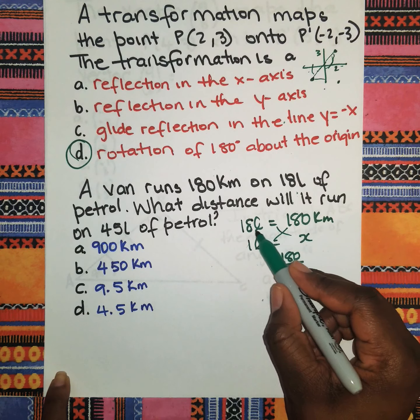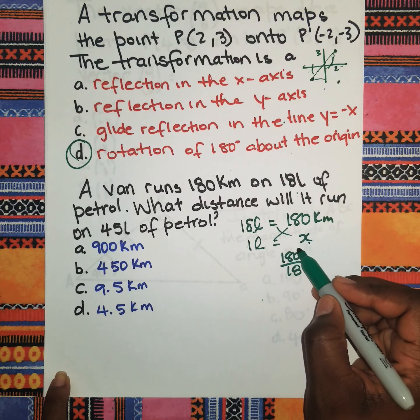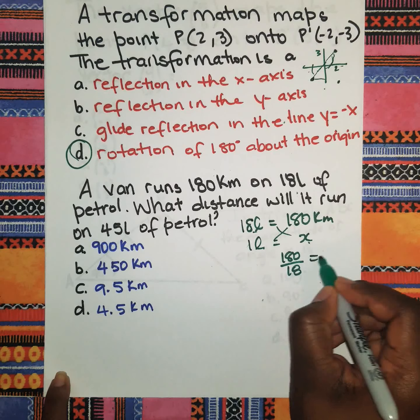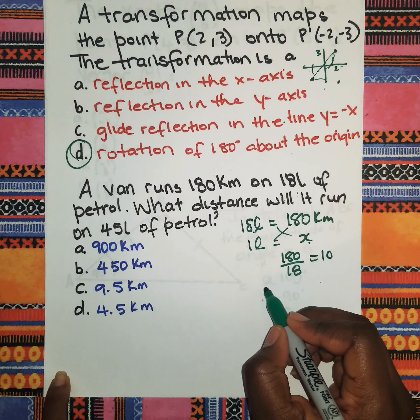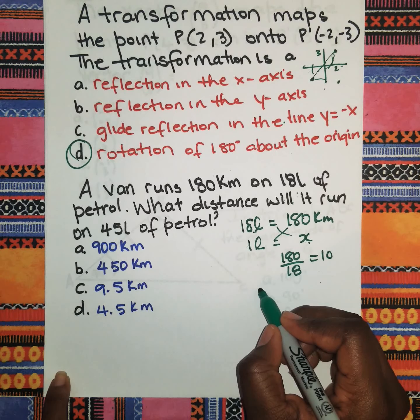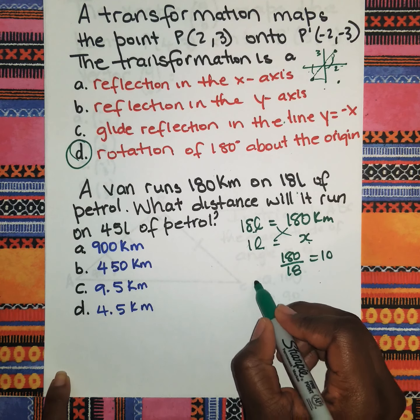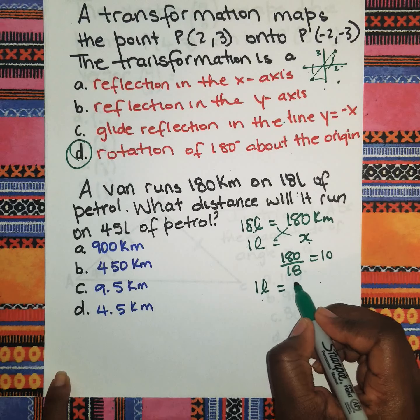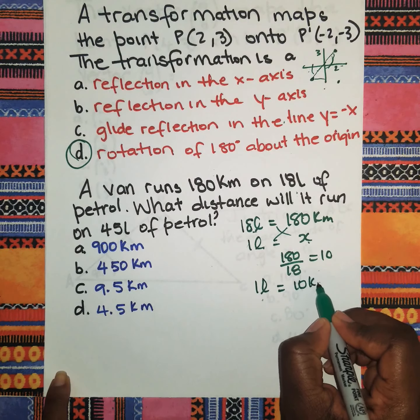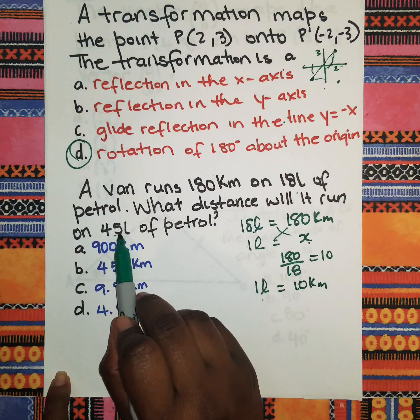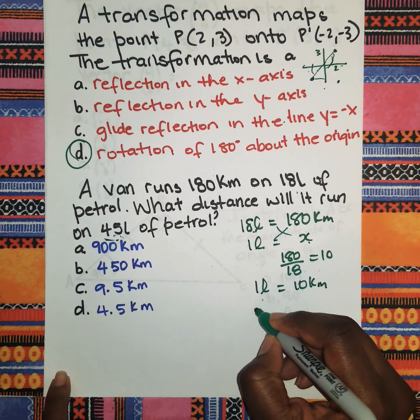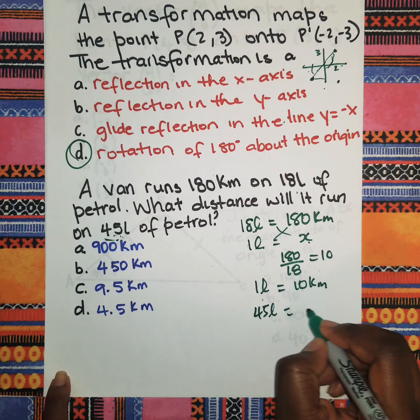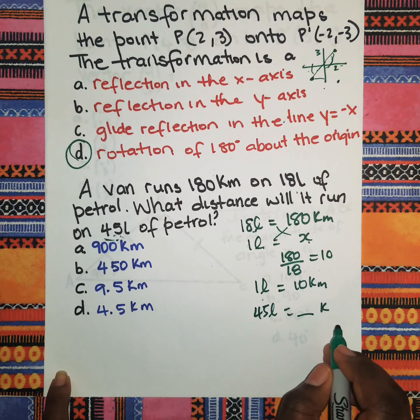You go ahead and cross multiply: 18 times x, 1 times 180, and then you divide and you get the answer. So we know that for 1 liter of petrol he went 10 kilometers.